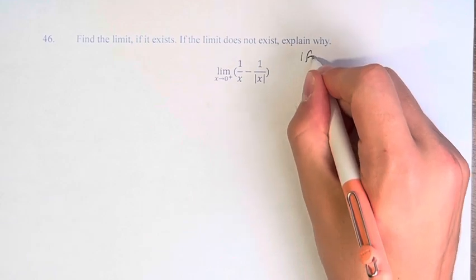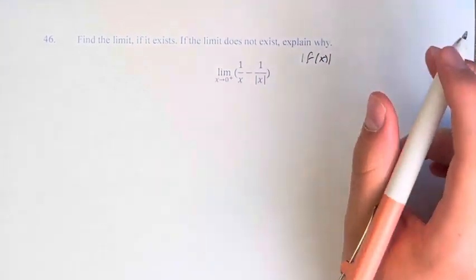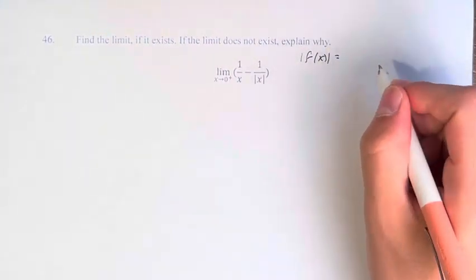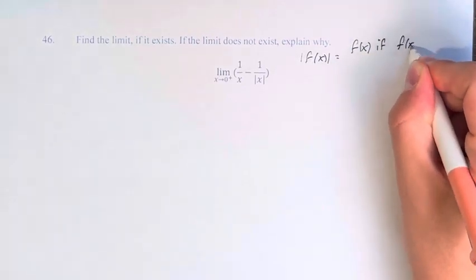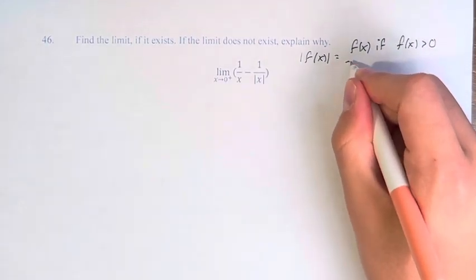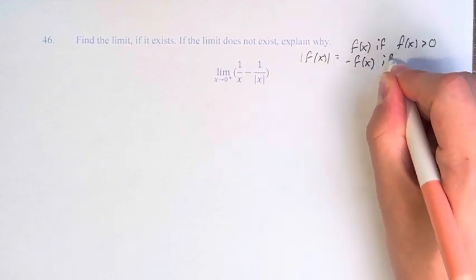So the absolute value of some function, in this case it's just x, but any function, is equal to the function itself if it's greater than 0, and it's equal to the negative of that function if it's less than 0.